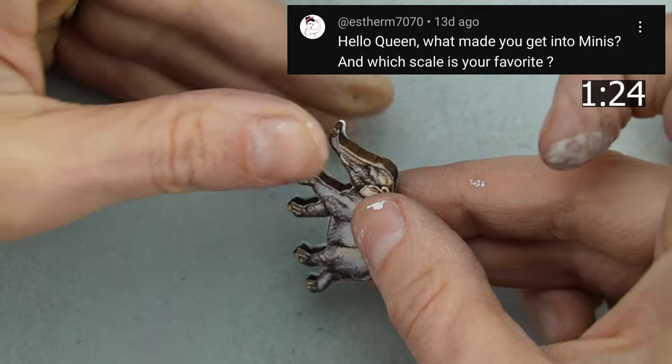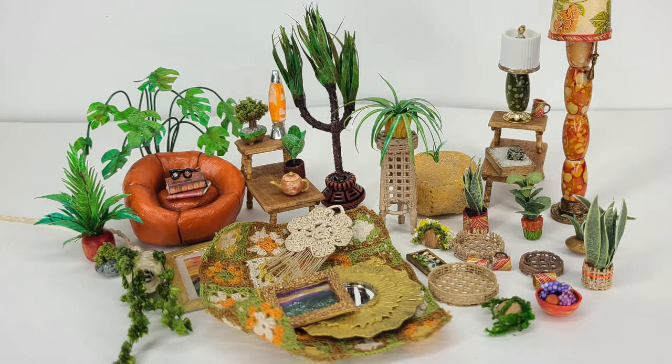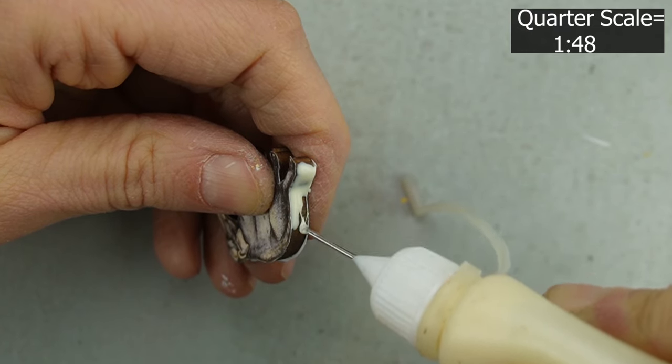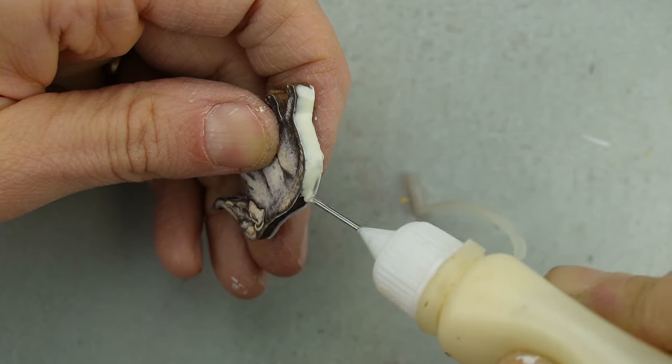I think my favorite scale to work in so far has been half scale, which are the items I made for Bentley House Minis. They were easier to make than quarter scale because you have a bit more space to work with, but they're not as big as 1:12 scale so you don't need as much detail.